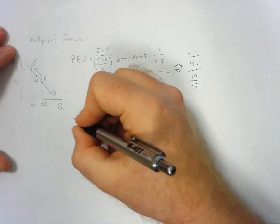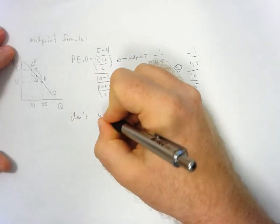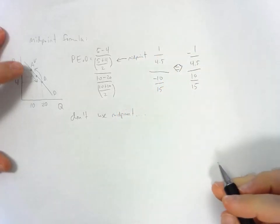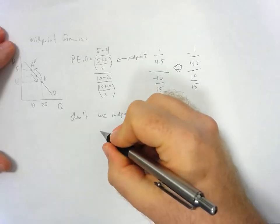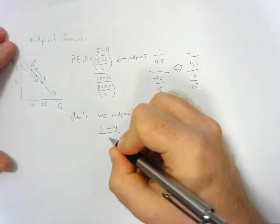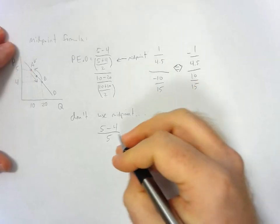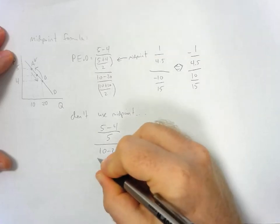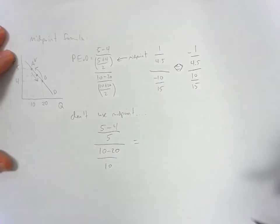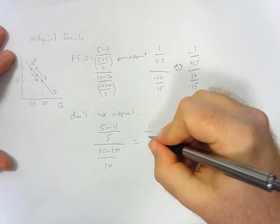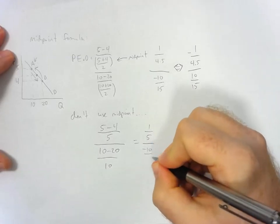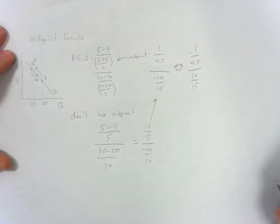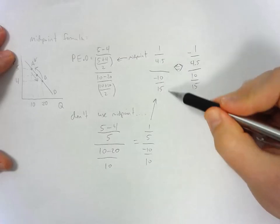Now imagine we don't use the midpoint formula and we move from point A to point B. We get (5 − 4) / 5 — using the initial value — divided by (10 − 20) / 10, which simplifies to 1/5 divided by −10/10. You can see that this is very different from what we got using the midpoint formula.